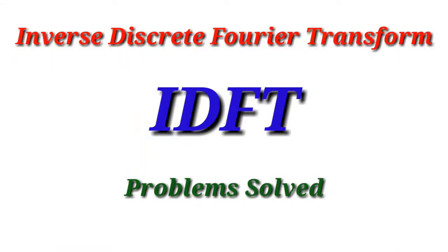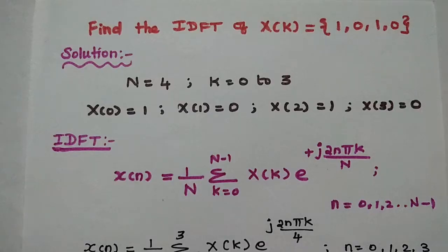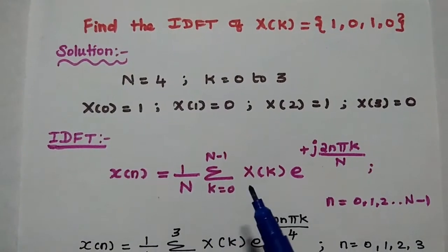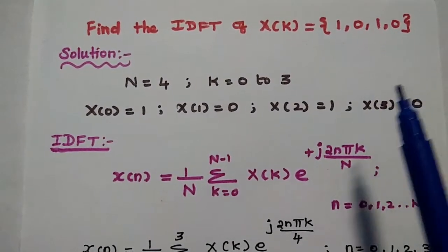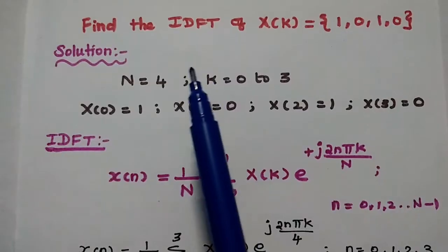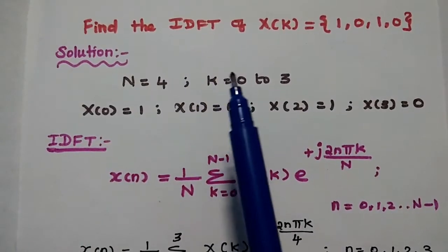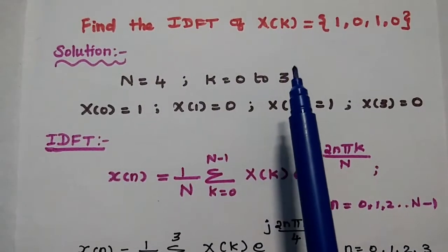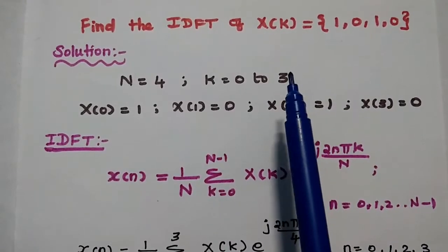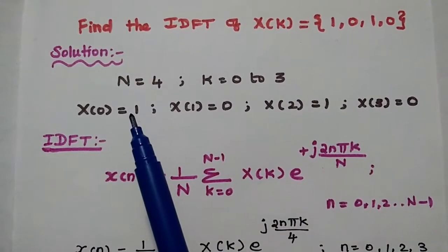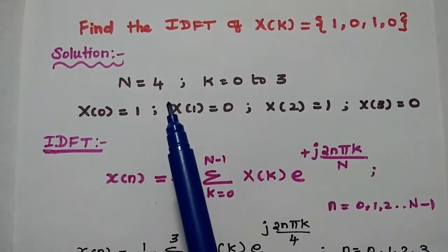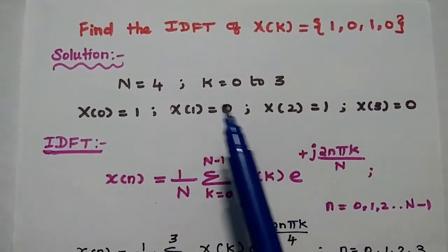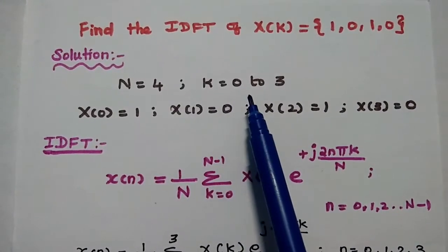Dear students, we are going to solve problems in inverse discrete Fourier transform. The first problem is to find the IDFT of X(k) = {1,0,1,0}. IDFT means inverse discrete Fourier transform, and capital X(k) represents the transformed sequence. From the given data, the capital N value is equal to 4 — there are 4 samples — so k varies from 0 to 3.